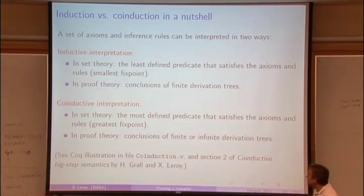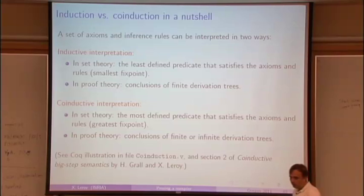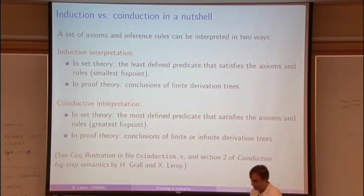But then there's a co-inductive interpretation, which is a greatest fixed point, or the most defined predicate that satisfies your axioms and rules. And in proof theory, that's just conclusions of finite or infinite derivation trees. Who said that the derivations must be finite? We know what an infinite tree is. And it can actually be shown fairly easily that those two views are equivalent. There's been a folklore result, but so Hervé Graal, my co-author, and I couldn't really find a published proof. So we wrote that somewhere in a paper.